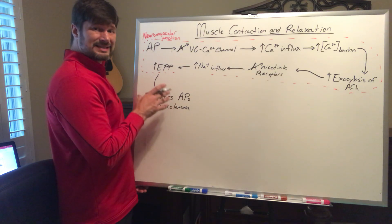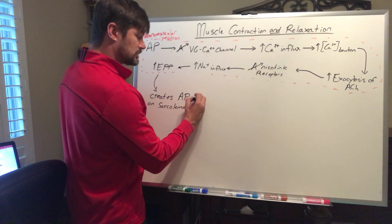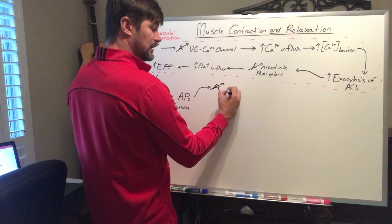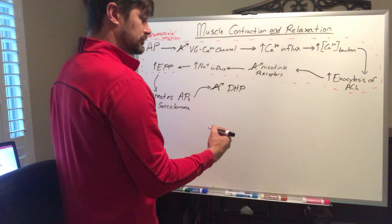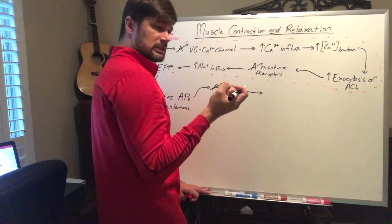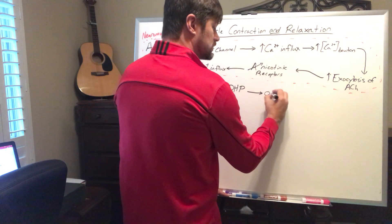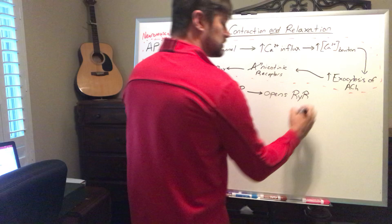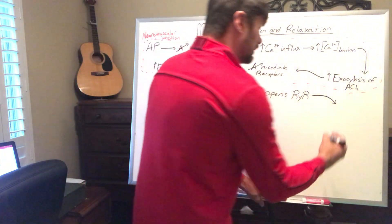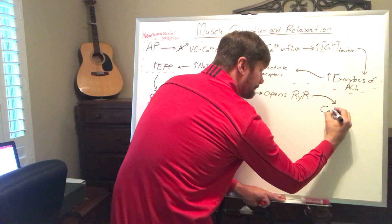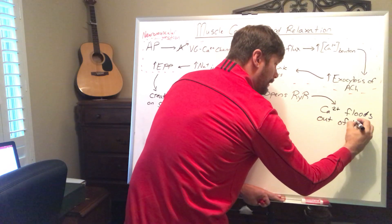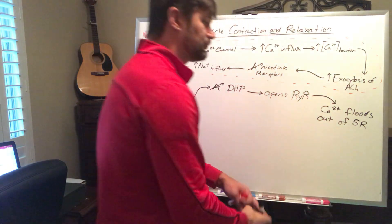Once we create action potentials on the sarcolemma, this is the beginning of the ECC — excitation-contraction coupling. This action potential travels down the T-tubules and activates the dihydropyridine receptors, the DHP, in the T-tubules. When the DHP become activated, they have that chain spring-like link protein that opens the ryanodine receptor. When the ryanodine receptor opens, calcium floods out of the SR — a massive flood of calcium.